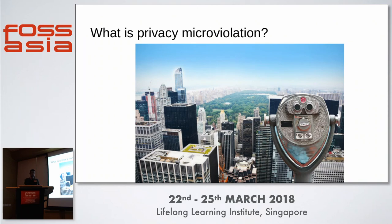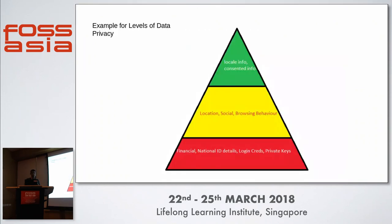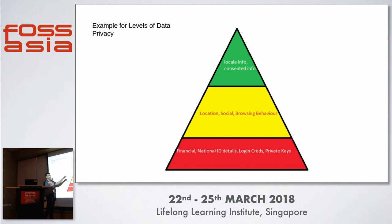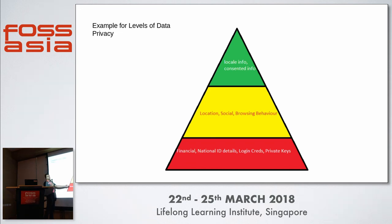I'll start by defining some levels of privacy. The green is your locale info — info that you consented to. A large amount of information, like your location, your social information, who your friends are, what your browsing behavior is, sits in this big yellow bar. What we actually consider private is normally our financial information, our national IDs, our private keys, our login credentials.